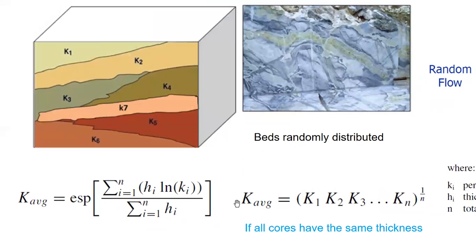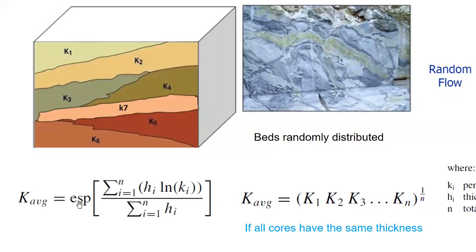If the thicknesses are different, the geometric average is calculated by first summing all (hi · ln(ki)) divided by total thickness, then taking the exponent of that result. So the formula uses the natural logarithm of permeability weighted by thickness, and then exponentiating.